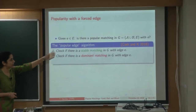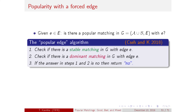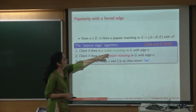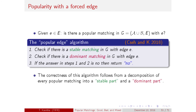If either step gives a matching, the problem is solved. If both give the answer no, then there cannot be any popular matching with edge E. The proof of correctness follows from a decomposition of every popular matching into a stable part and a dominant part. These two essential parts cover all popular matchings with a given edge.